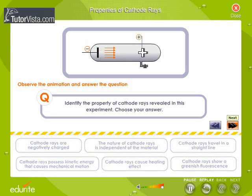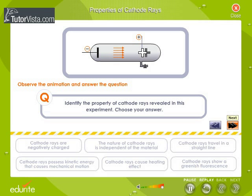The cathode rays cause a shadow of the plus sign. Which property of the cathode rays is depicted here? Choose from the options given below.